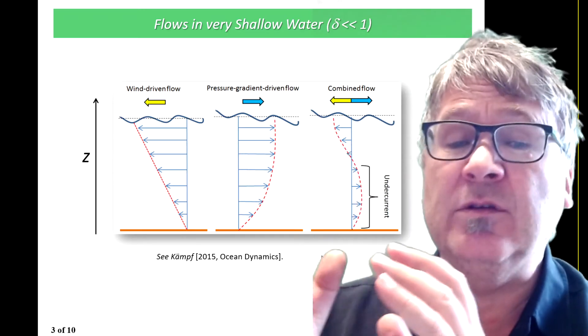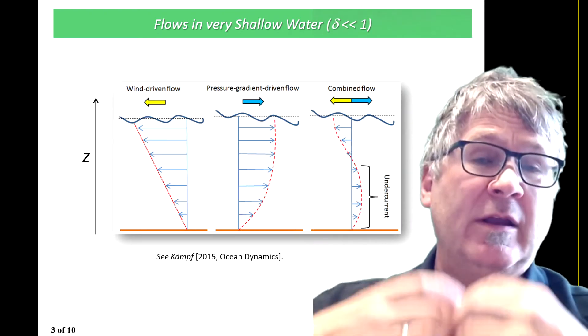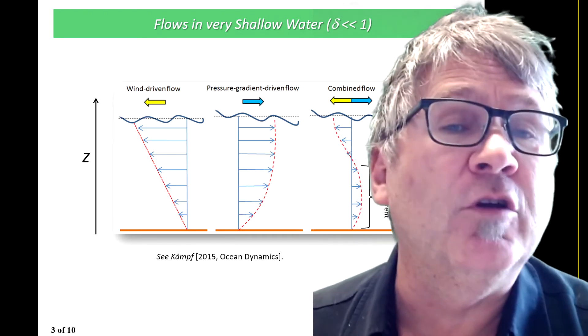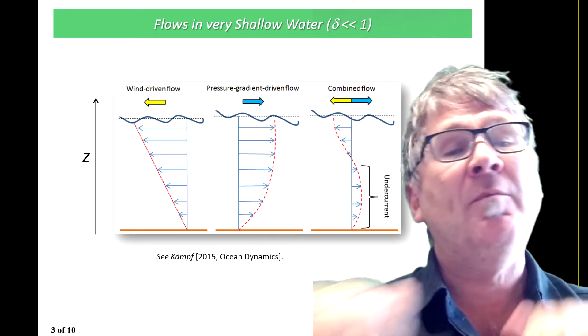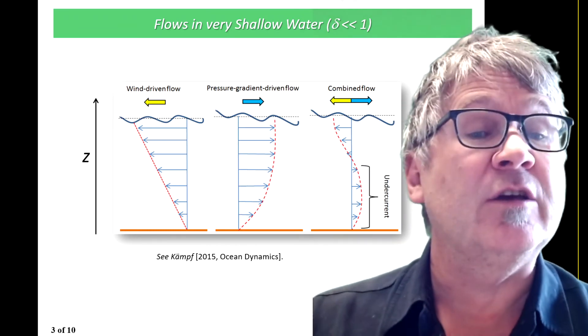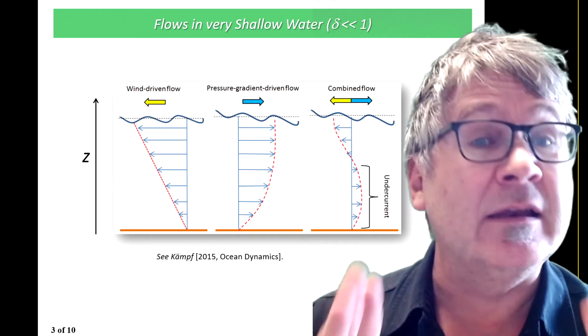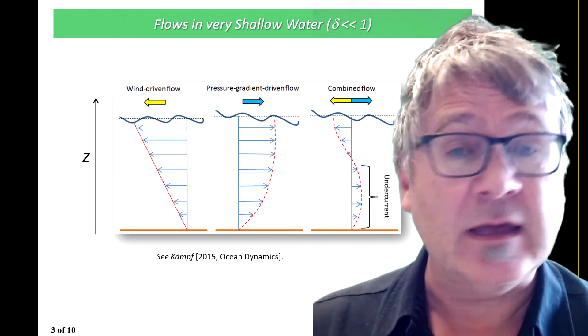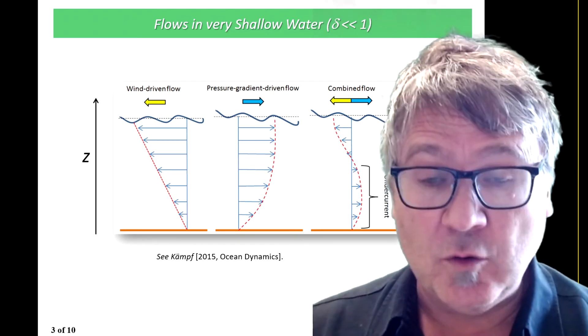Not going into the details, what I'm telling you is if you have a wind-driven flow in one direction and the pressure gradient driven flow in the opposite direction, they don't cancel each other. They actually create an undercurrent and a surface current, and that's important to know.